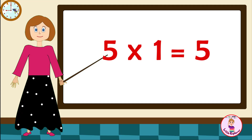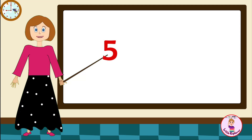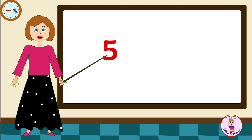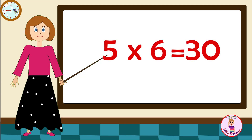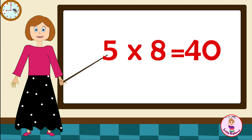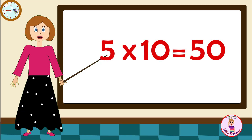5 ones are 5. 5 twos are 10. 5 threes are 15. 5 fours are 20. 5 fives are 25. 5 sixes are 30. 5 sevens are 35. 5 eights are 40. 5 nines are 45. 5 tens are 50.